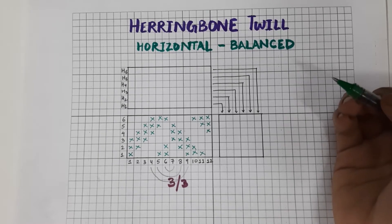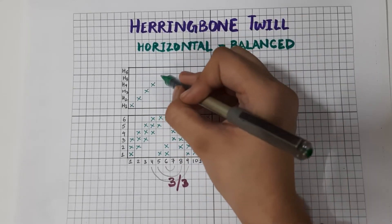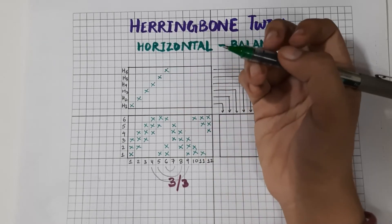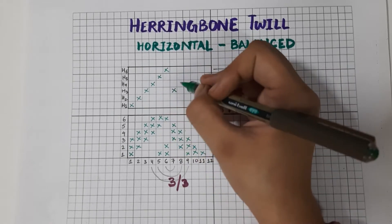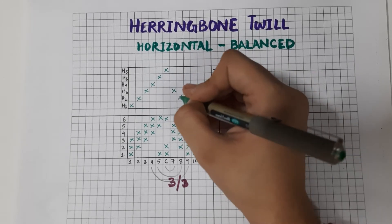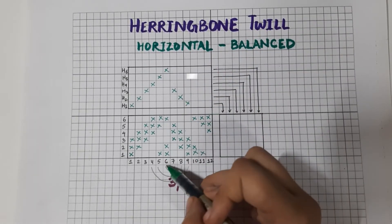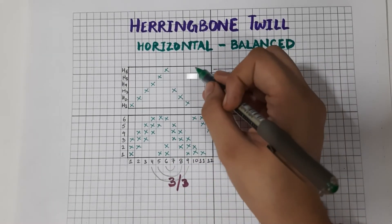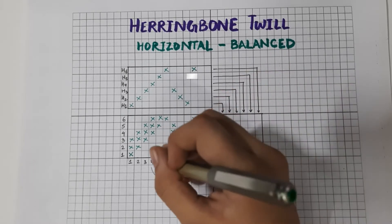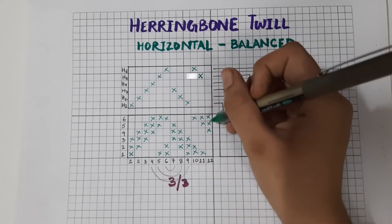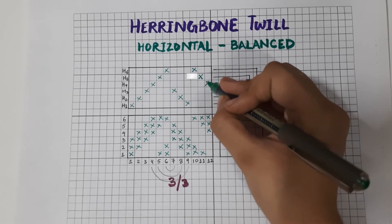Now let us see the draft of the design. For a twill it is a straight draft, so the first six ends will pass through six heel frames. Now the seventh end — the design is same as the third end, so it will pass through the third heel frame. The eighth one will pass through the second heel frame. The ninth end will pass through the first heel frame. The tenth warp end is similar to the sixth warp end, so it passes through the sixth heel frame. The eleventh is similar to the fifth — it passes through the fifth heel frame. The twelfth warp end is similar to the fourth, so it passes through the fourth heel frame.